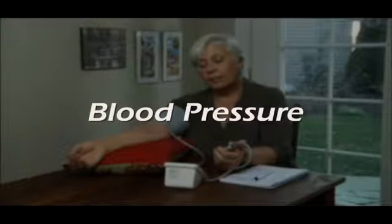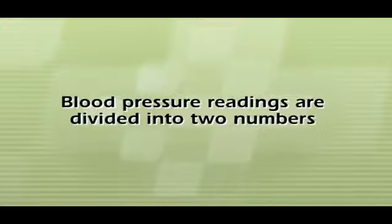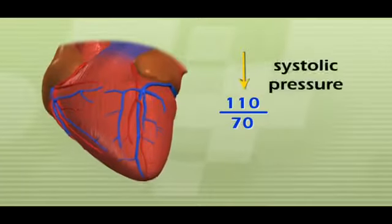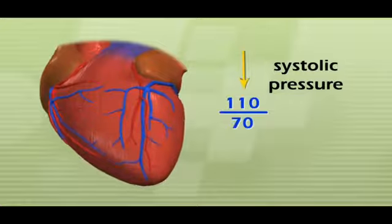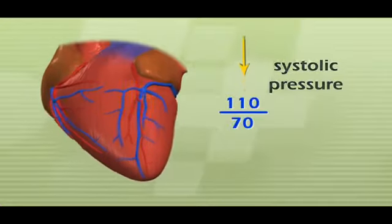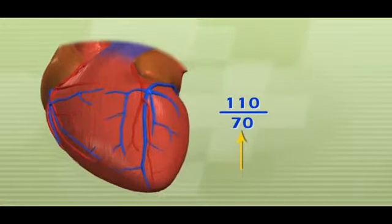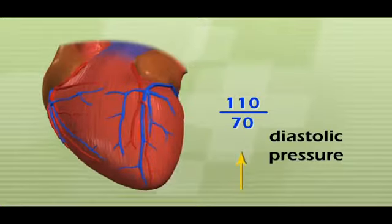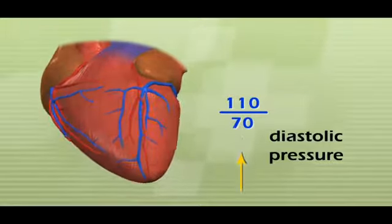Blood Pressure. Your blood pressure measures how much force is applied to your blood vessels when your heart pumps blood through your body. Blood pressure readings are divided into two numbers. The first number is your systolic blood pressure, the maximum pressure when your heart contracts. The second number is your diastolic blood pressure, the minimum pressure when your heart is at rest.